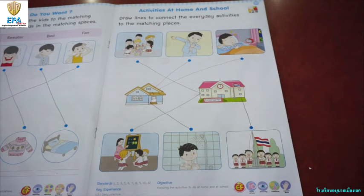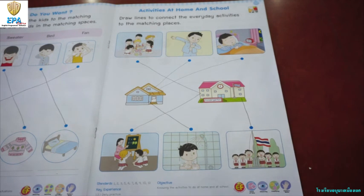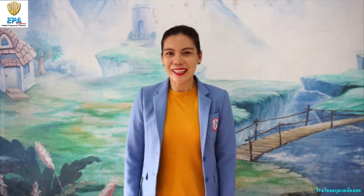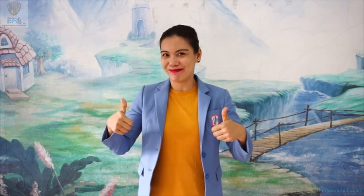So there you go, kids. There are different activities and there are different places where we can do them. There are activities that we can do at home and activities that we can do in school. That's all for today. I hope that you learned something from our discussions and our activities. I hope to be doing fun with you again next time. Bye bye!